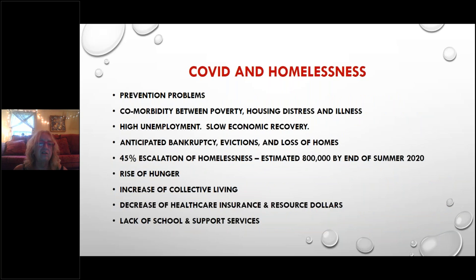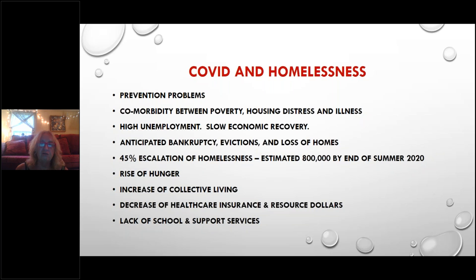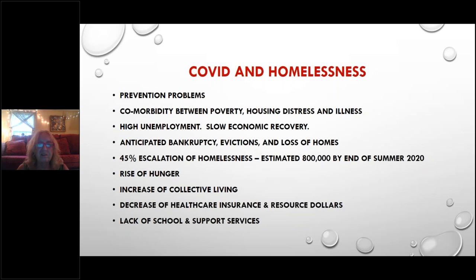COVID and housing distress together create a variety of prevention problems. It's very difficult to prevent the way that a housed person with resources may be able to. There is high comorbidity between poverty, housing distress, and illness in general, and I would assume COVID in particular. There is high unemployment across the U.S. and around the world as people get sick and jobs disappear. The economy may be slow to recover, meaning economic problems are long-term, not short-term. We can anticipate bankruptcies, evictions, and loss of ability to protect oneself going up.